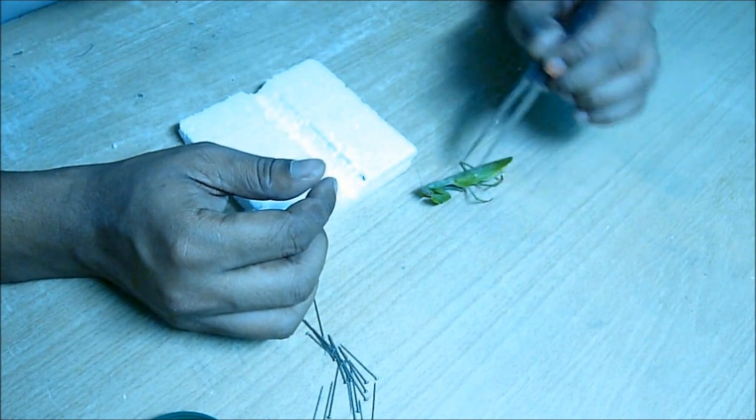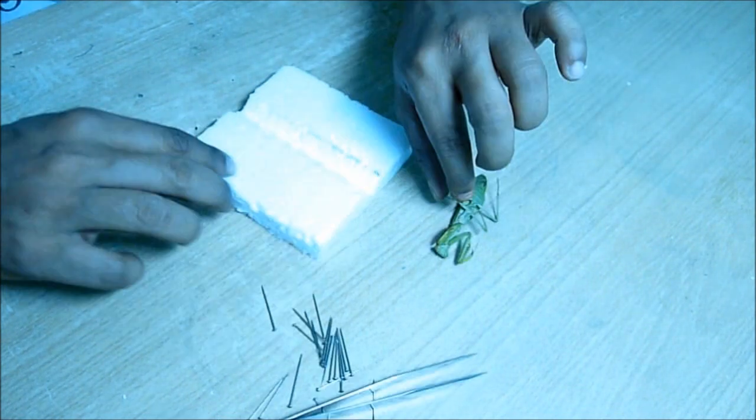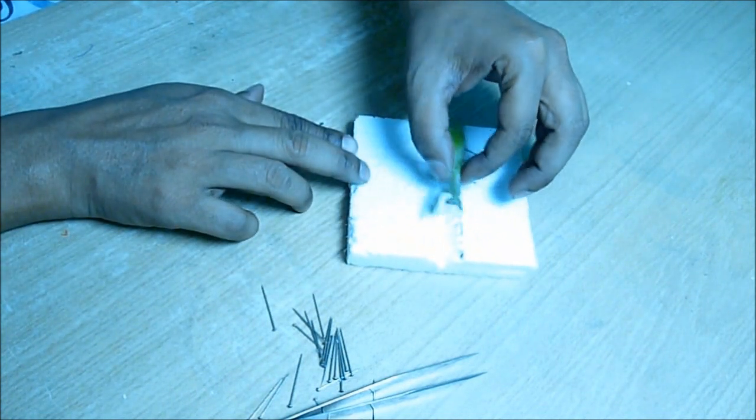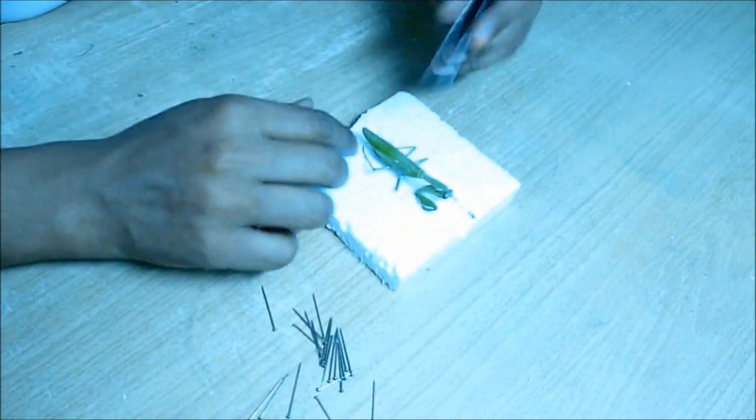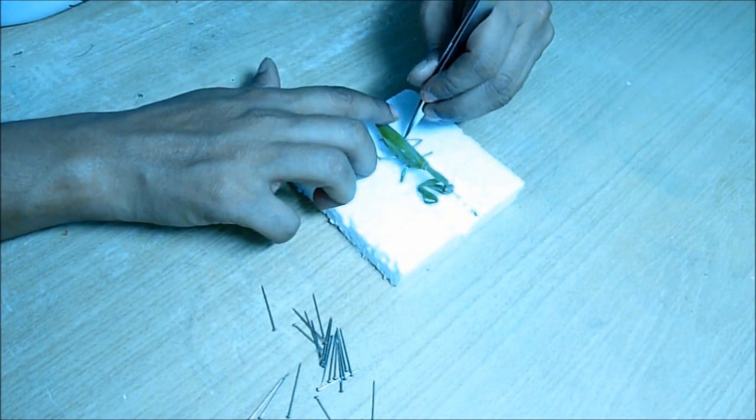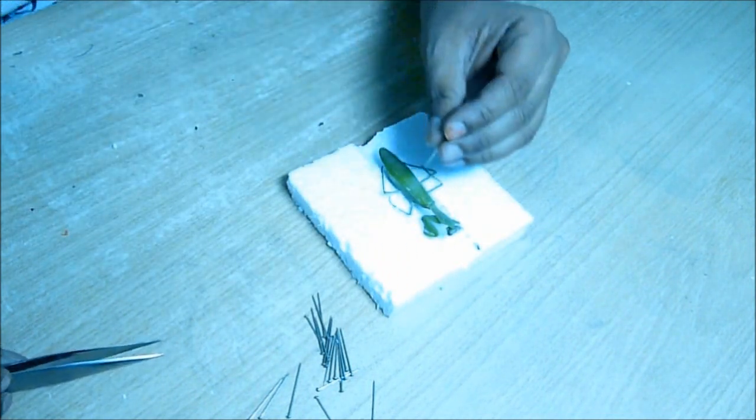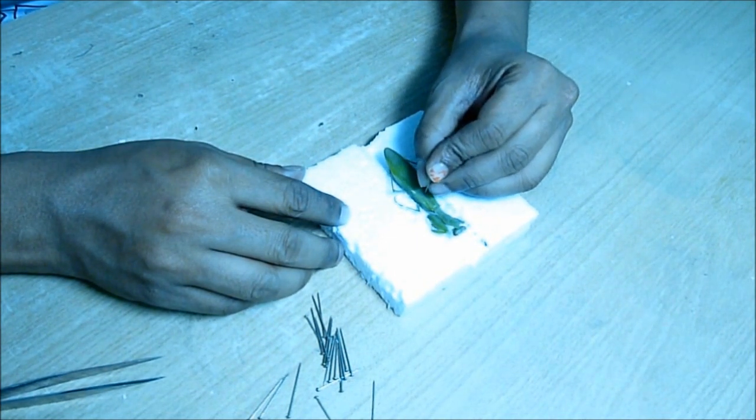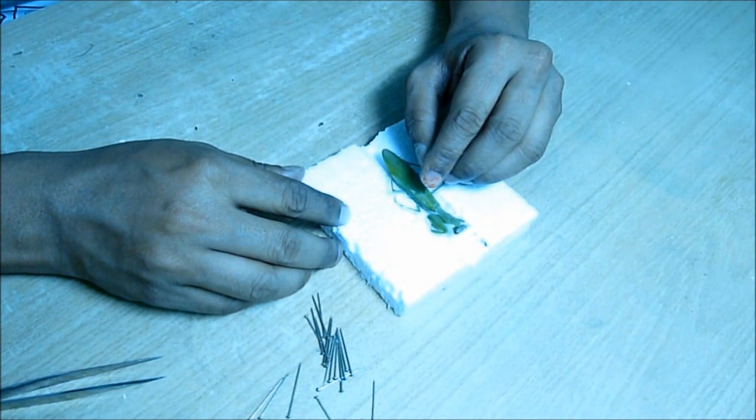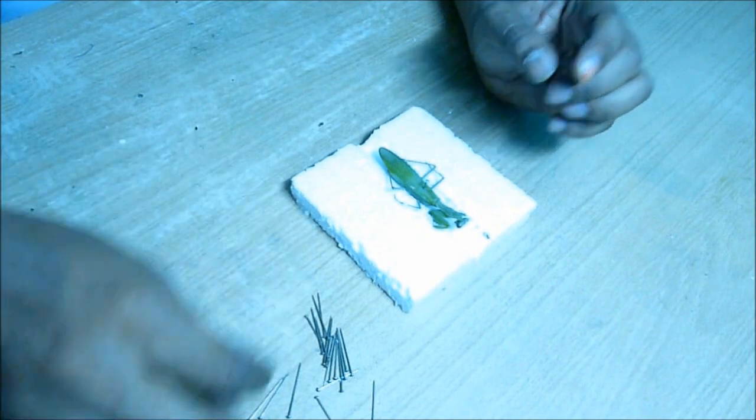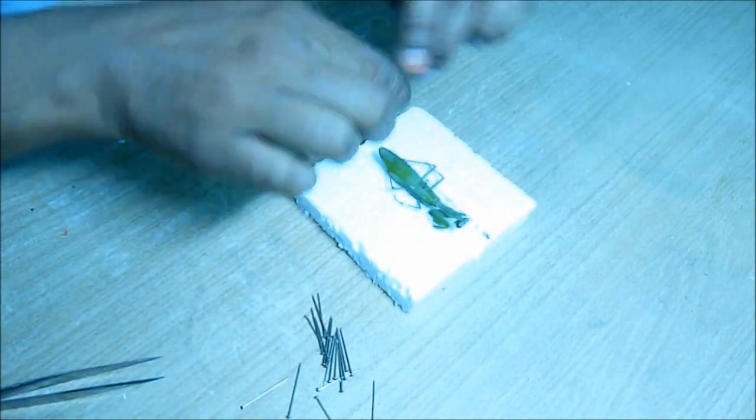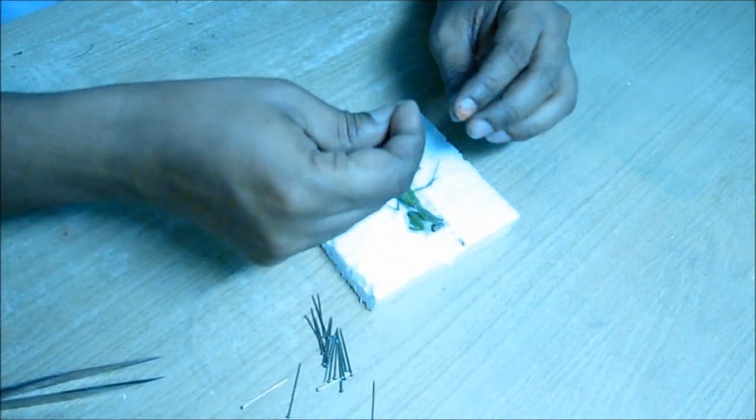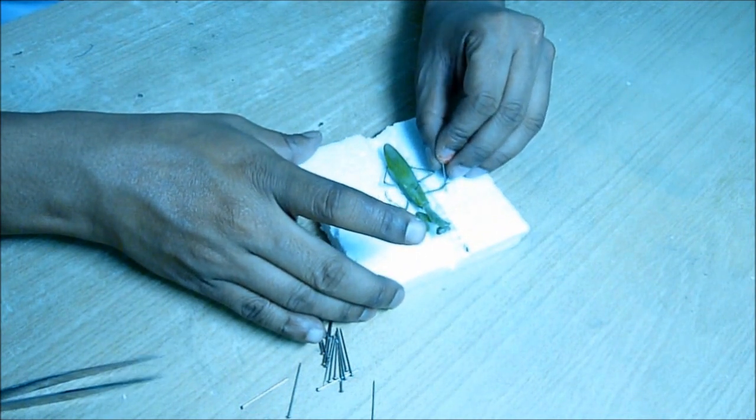With the help of a tweezer I placed this insect at the center of this trench. First I use a pin to prick through the body of the insect to the thermocol to fit that into the thermocol. Then I use other pins to give a proper shape by stretching the legs, all the six legs, and the antennas.